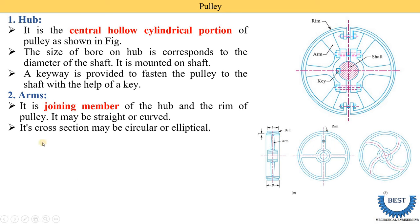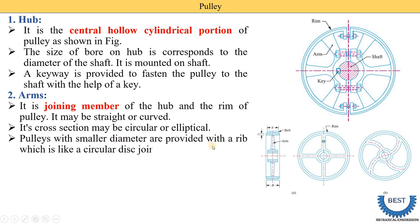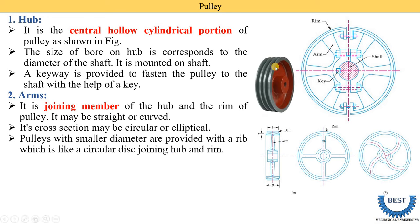The cross-section of the arm may be circular or elliptical — meaning when we cut the arm, it may look like a circle or an ellipse. In this diagram, the cross-sectional shape shown is elliptical. For pulleys with a smaller diameter, a rib is provided, which is like a circular disc joining the hub. For smaller pulleys, a continuous disc-type portion is used, and this is called the disc arm.